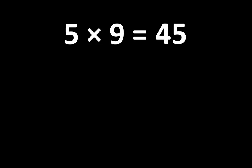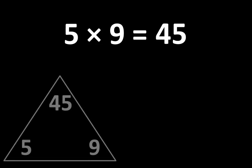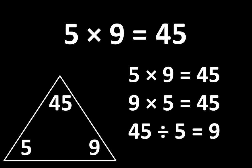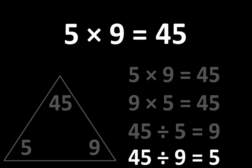5 times 9 equals 45 and we can show that with a triangle like this, but there are many other relationships represented here. We can see that 5 times 9 equals 45 and 9 times 5 equals 45. We can also see that 45 divided by 5 equals 9 and 45 divided by 9 equals 5, and we can write that many different ways.